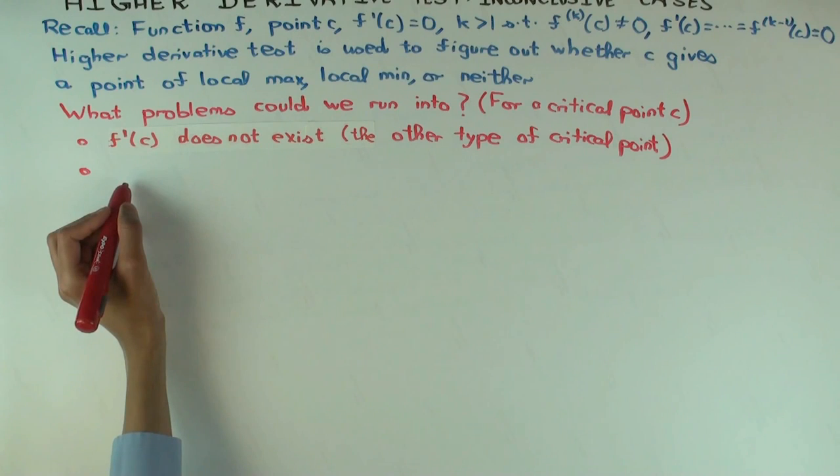What's the next type of problem you could have? Can the next derivative become non-zero? Well, that's actually the third one on my list. Is there some other problem you could have?